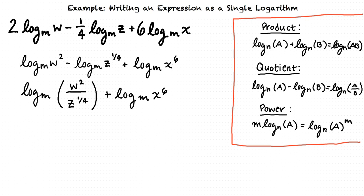Notice that when we use the quotient property, the second term that is being subtracted from the first term becomes the denominator in the simplified expression. The first term that is having something subtracted from it becomes the numerator in the simplified expression.